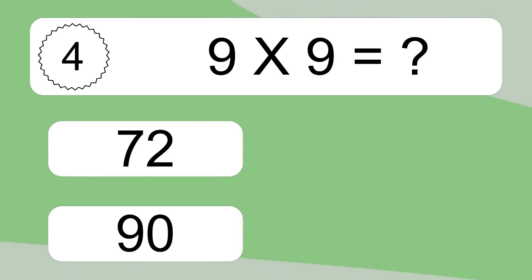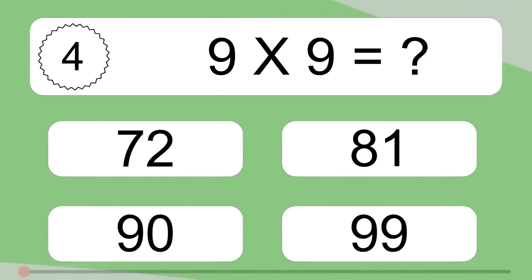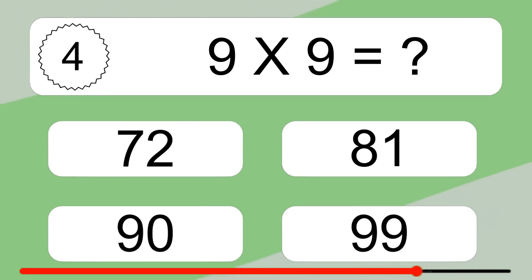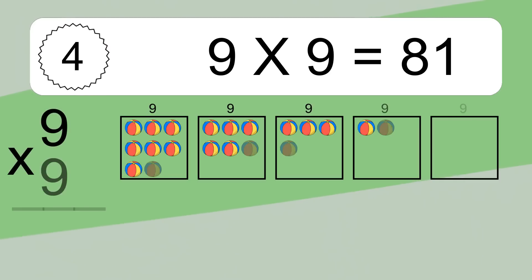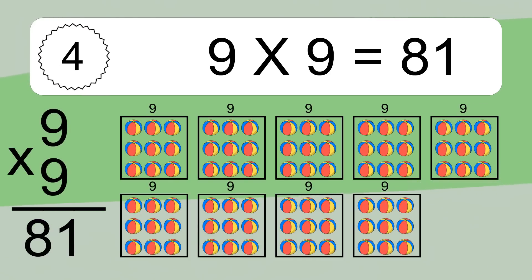9 times 9 equals what? 9 times 9 equals 81.